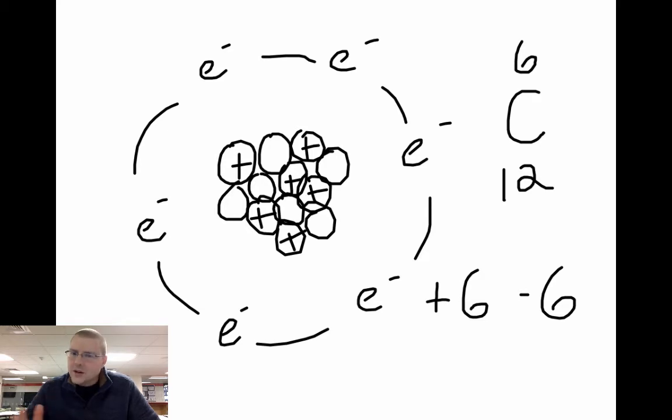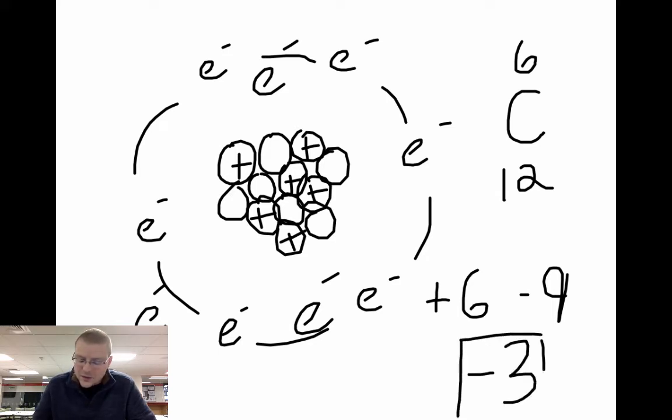So how do I make the carbon atom negative? Well, I would take that carbon atom and rub it against wool or something that has a tendency to become positive. Because if it becomes positive, it's going to give its electrons to the carbon atom. And if it gains some electrons here, all I've done is change my electron number. So now I have nine electrons and six protons. It gives me a total net charge of negative three. My atom is charged negative three.